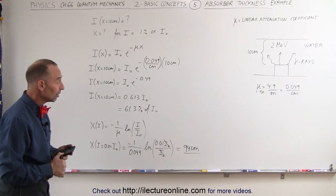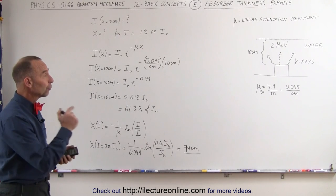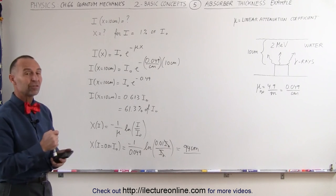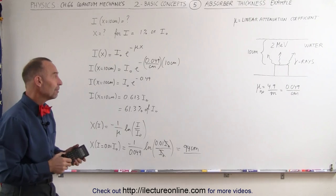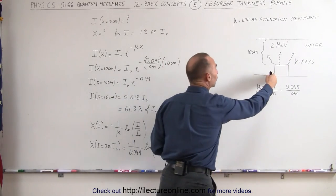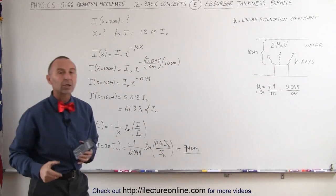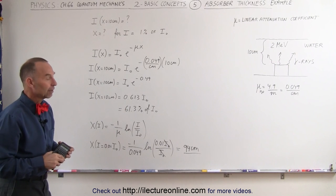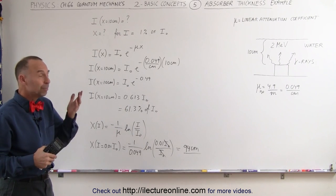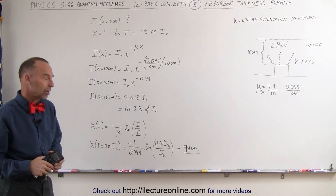That's a lot more than 10 centimeters but that's what it takes to get the radiation down to just one percent of the original intensity and if the source is not a very strong source that may be sufficient for adequate protection. If it's not then you need to make the water level even deeper so that you have additional protection.